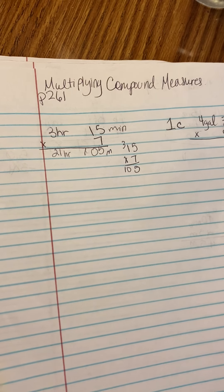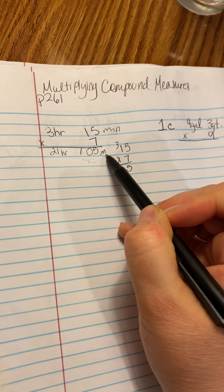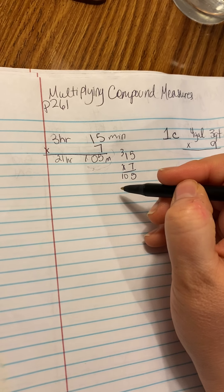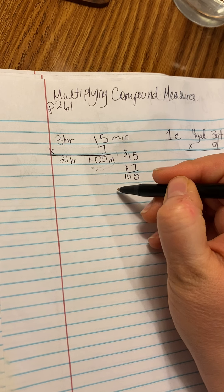Seems like we're done, but not quite. So now we know that 105 minutes is actually more than an hour. So there's 60 minutes in an hour, so we have to take 60 out of that 105.